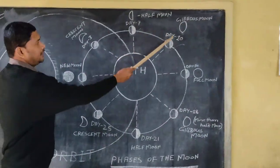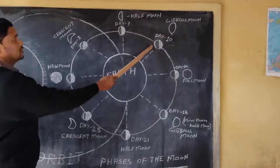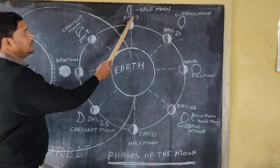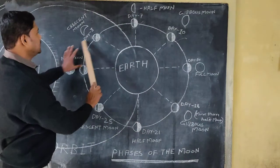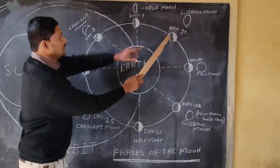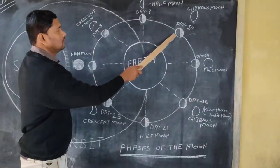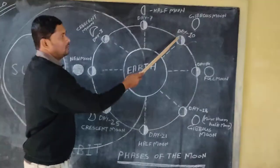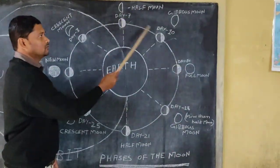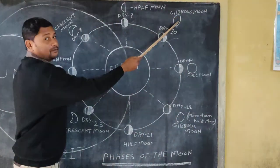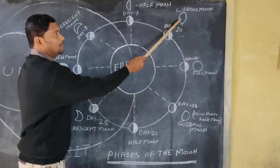Then on day ten, we have the gibbous moon. You can see here — we had the half moon at day seven, and now on day ten the moon is getting more sunlight. We can see more than half of the moon. So this is known as the gibbous moon. As I have drawn here, you can see it is more than the half moon.